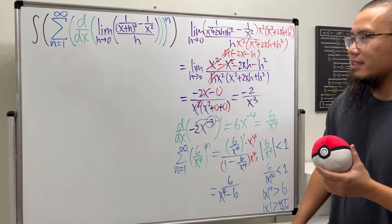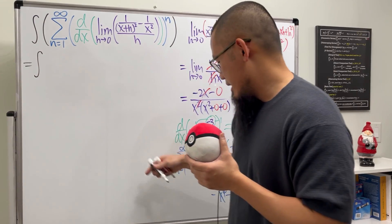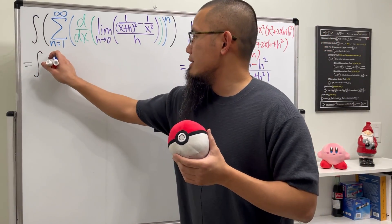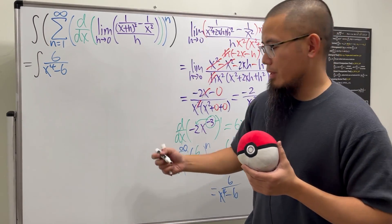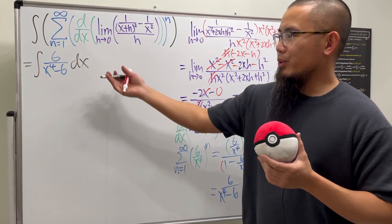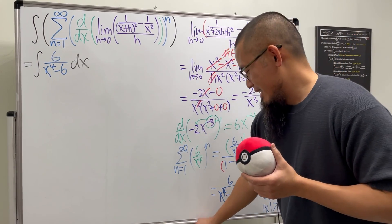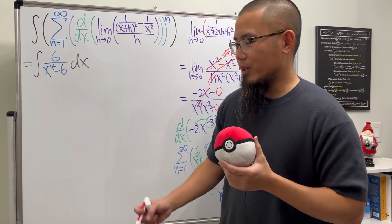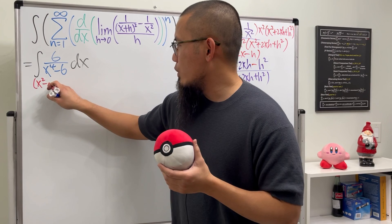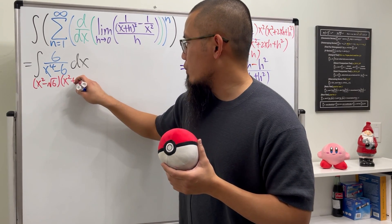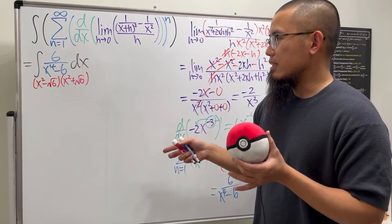Now we go back to integrating. We are looking at the integral of 6 over (x to the fourth minus 6). We are going to do partial fractions. We'll factor the denominator as (x squared minus square root of 6) times (x squared plus square root of 6). You don't have to continue factoring further — this is actually fine.